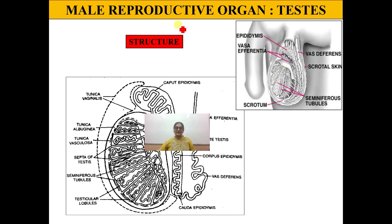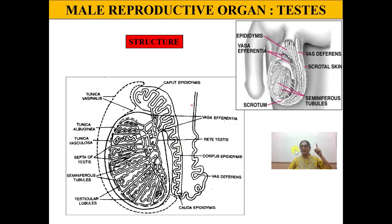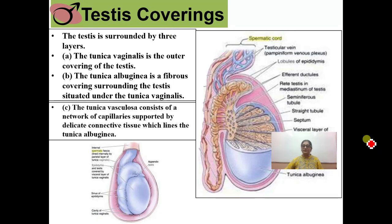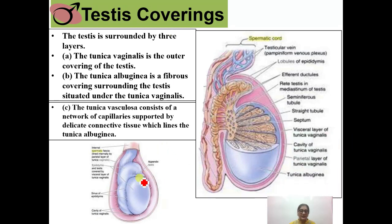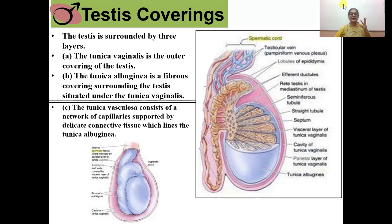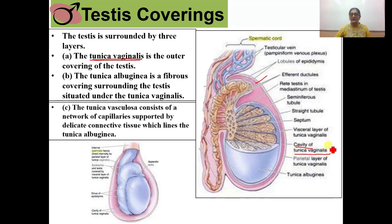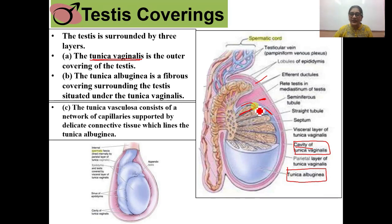Now let us go to the structure of one testis. We studied the position; now let us study the structure. The testis is externally covered by three layers. The outermost layer, which is pink in color in the diagram, is called the tunica vaginalis. The second layer, shown in blue, is called the tunica albuginea. If you observe, this tunica albuginea invaginates into the testis.